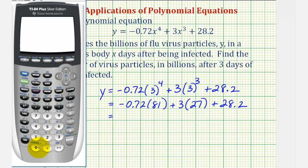We have negative 0.72 times 81, which is negative 58.32, and then we have three times 27, which is equal to 81. Let's just go ahead and check that. So again, we have negative 58.32 plus 81 plus 28.2.